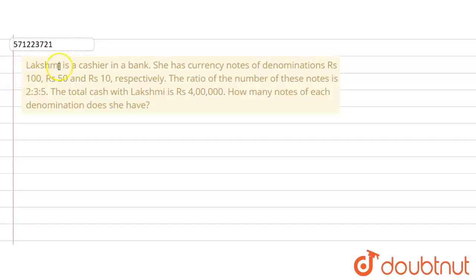The question says that Lakshmi is a cashier in the bank. She has currency notes of denominations rupees 100, rupees 50 and rupees 10 respectively.